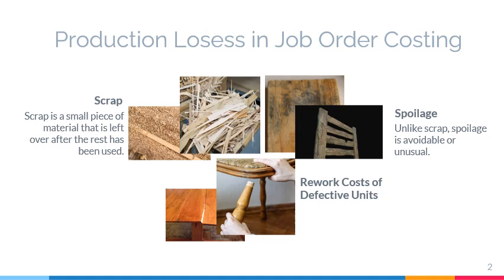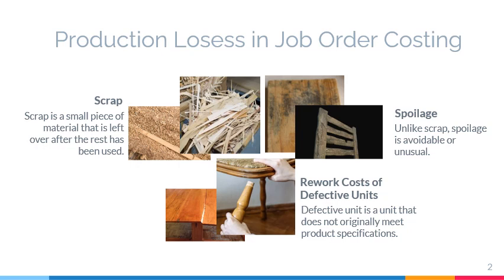A defective unit is a unit of product that has not originally met product specifications. Unlike spoilage, a defective unit can be technically and economically corrected. A chair's broken leg and a crack on a table surface are examples of defects that may be easily reworked.